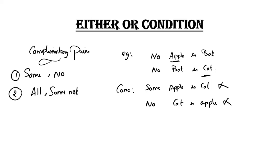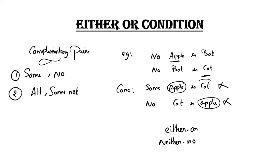This is a solution. There are two possible answers: the first possible answer is either-or, and the second is neither-nor. These are two answers. Let's look at the variables here — here is apple, here is apple, here is cat and here is cat.